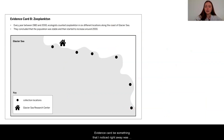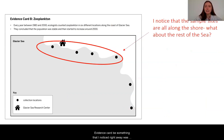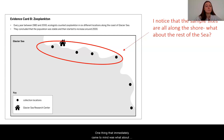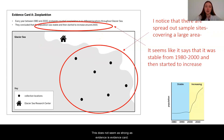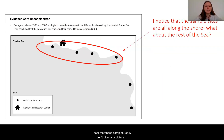In evidence card B, something that I noticed right away was that all the samples were taken by the shore. One thing that immediately came to mind was: what about the rest of the sea? This does not seem as strong evidence as evidence card A. I feel that these samples really don't give us a picture of the whole glacier sea, and that is something we're looking for.